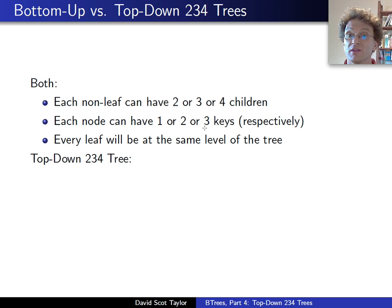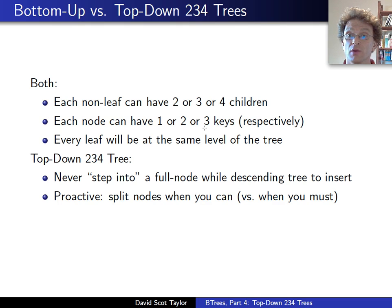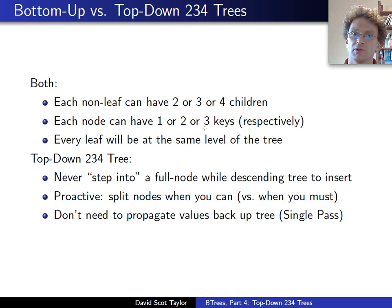So what's the difference? In the top-down version of the tree, we will never step into a full node while we're going down the tree during an insertion. We're going to proactively split the node when I'm about to step into it going down the tree instead of procrastinating and splitting the node when I'm forced to by something telling me from below there's no room to insert. When we do this, we're going to be able to do insertion in a single pass down the tree. We're never going to have to go back up the tree because when we get down to a leaf, there's always going to be room for the thing that we are inserting.